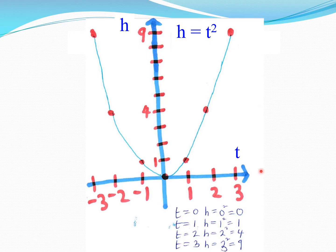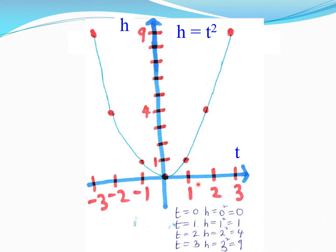Here is a basic graph of a parabola shape. To plot it, we use the t-axis and the h-axis. If we're doing h equals t squared, when t is zero, h equals zero. When t equals one, h equals one. When t equals two, h equals four. So the point is two, four.